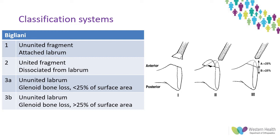The Bigliani classification has three grades: progressing from a bony avulsion with labrum and capsule attached, to a bony avulsion dissociated from labrum but healed back to bone — typically as a malunion — and finally labrum detached from bone with resorption of bone from the glenoid fossa of greater or lesser amounts.